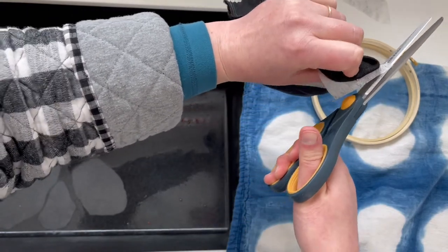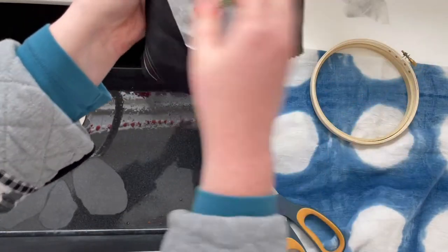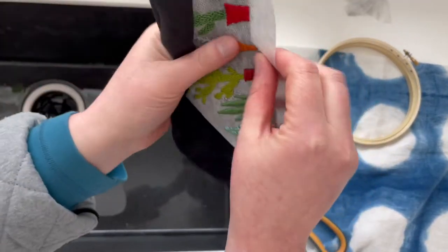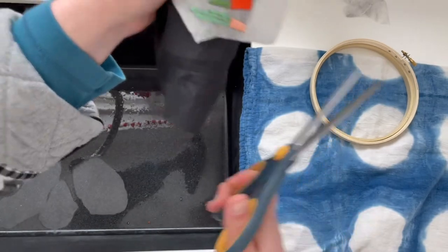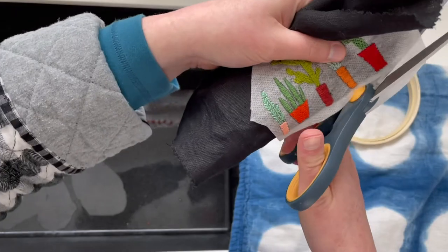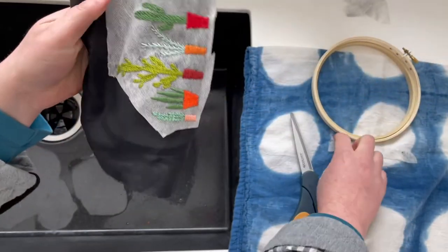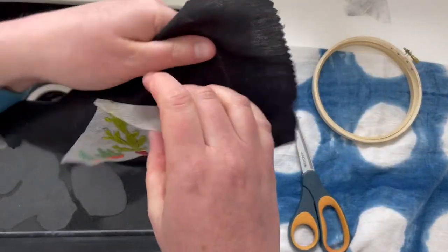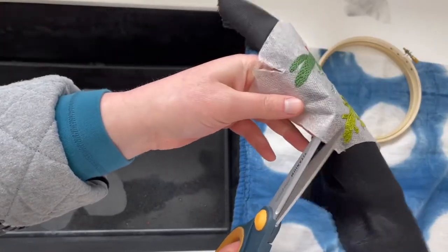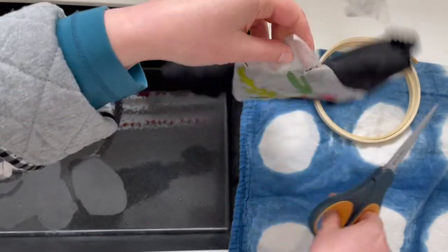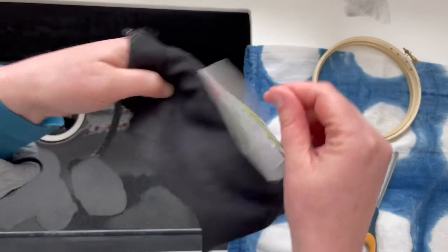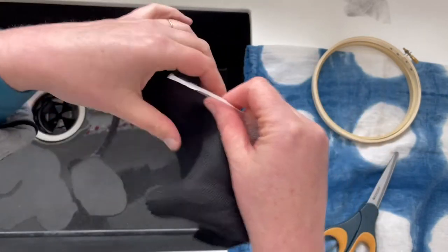I usually only use this if I'm doing dark fabrics, but I have done it on lighter fabrics and sometimes it leaves a little bit of a residue. So I want to just avoid that as much as possible. I'm just going to try to get off as much as I possibly can in the areas where there's not stitching. You can - it rips slightly, but it doesn't rip very well.